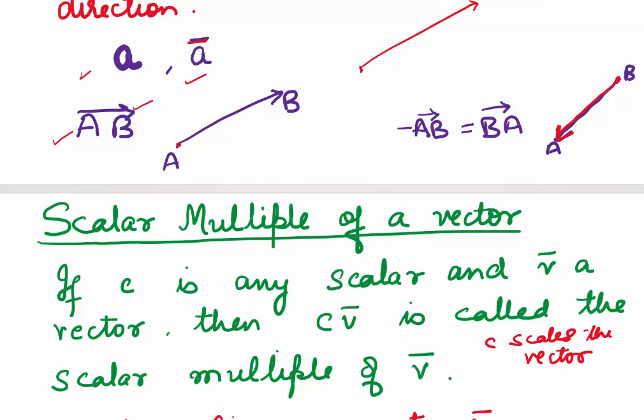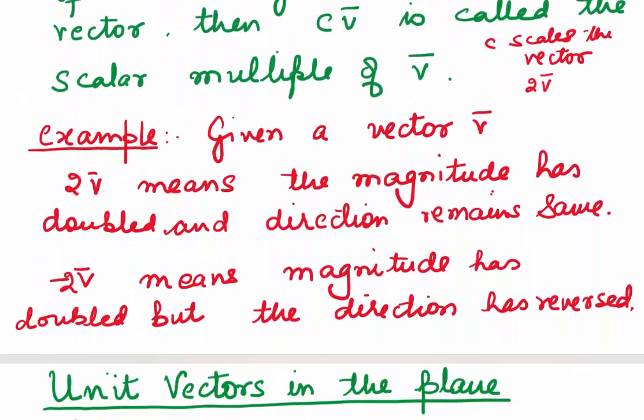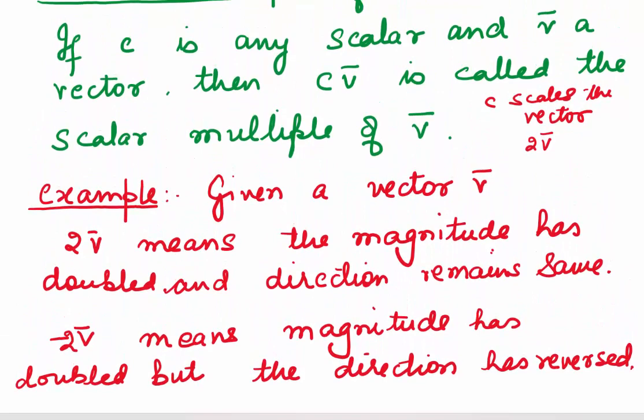If my c is 2 and we say it is 2v, it means my vector has doubled in magnitude. For example, given a vector v, 2v means that the magnitude has doubled and the direction remains the same. But when we write minus 2v, it means magnitude has doubled but the direction has reversed. So the minus sign tells us that the direction has reversed.